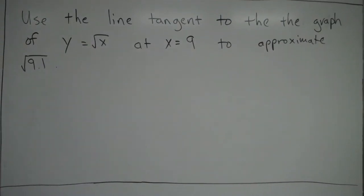Let's take a look at an example of a tangent line approximation. In a prior video, I explained the concept behind it, although it's a bit difficult without looking at an actual example. So here it says, use the line tangent to the graph of y = √x at x = 9 to approximate √9.1.